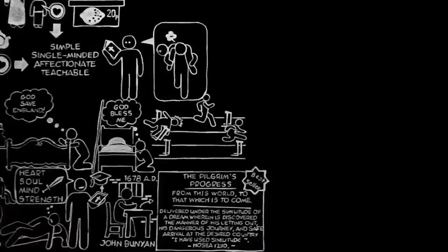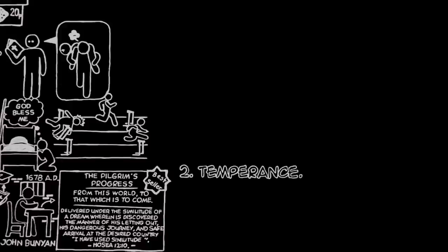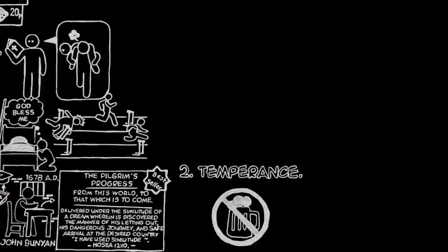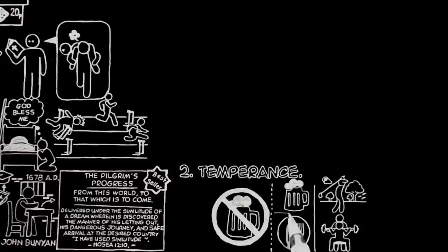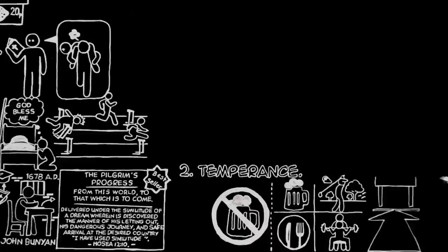Temperance is, unfortunately, one of those words that has changed its meaning. It now usually means teetotalism. But in the days when the second cardinal virtue was christened temperance, it meant nothing of the sort. Temperance referred not specially to drink, but to all pleasures. And it meant not abstaining, but going the right length and no further. It is a mistake to think that Christians ought all to be teetotalers.